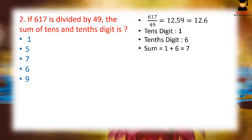The next question asks: if 617 is divided by 49, what is the sum of the tens and tenths digits? This is very simple if you know what the tenths digit means. When you divide 617 by 49, you get approximately 12.59. Consider a number like 42.96: the 4 is the tens digit, 2 is the units digit, 9 is the tenths digit, and 6 is the hundredths digit.